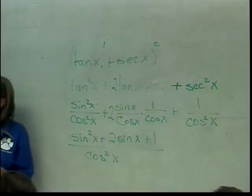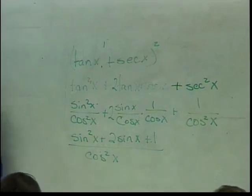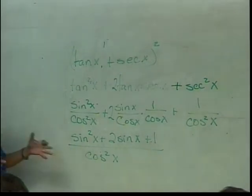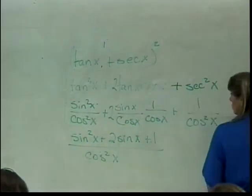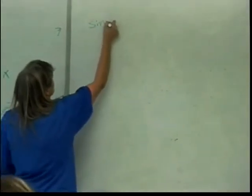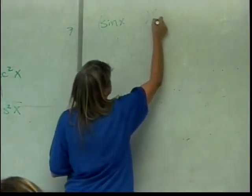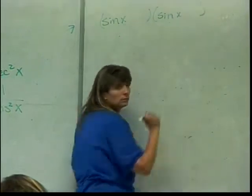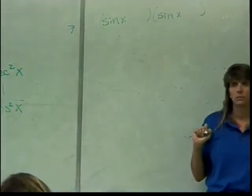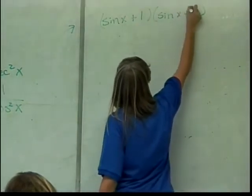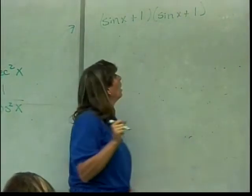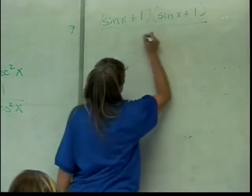Suggestions. Keeping in mind that I'm aiming toward having only sines in the numerator and sines in the denominator, where remember a and b are going to be numbers, what should I do now? You want to factor the numerator? Okay. We'll factor the numerator. When I factor the numerator, what do I get? Plus 1 and plus 1? Yeah. Alright. My denominator is still cosine squared of x.